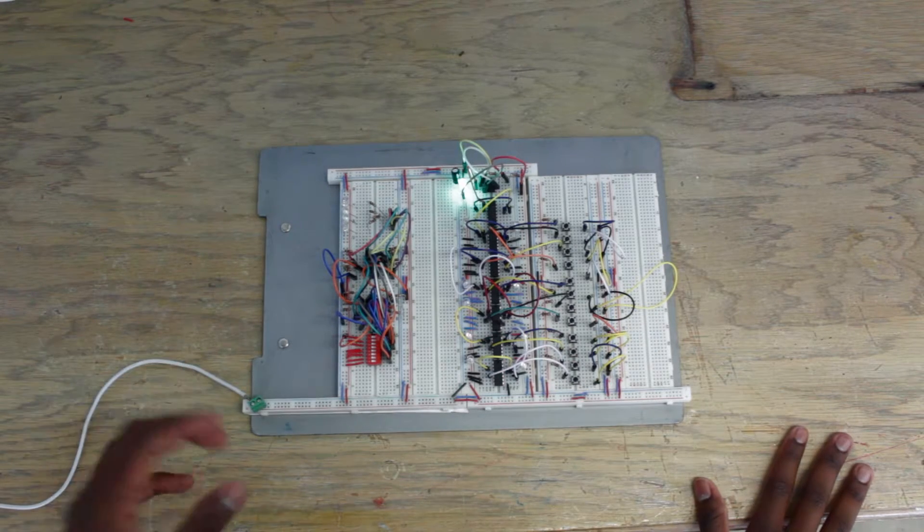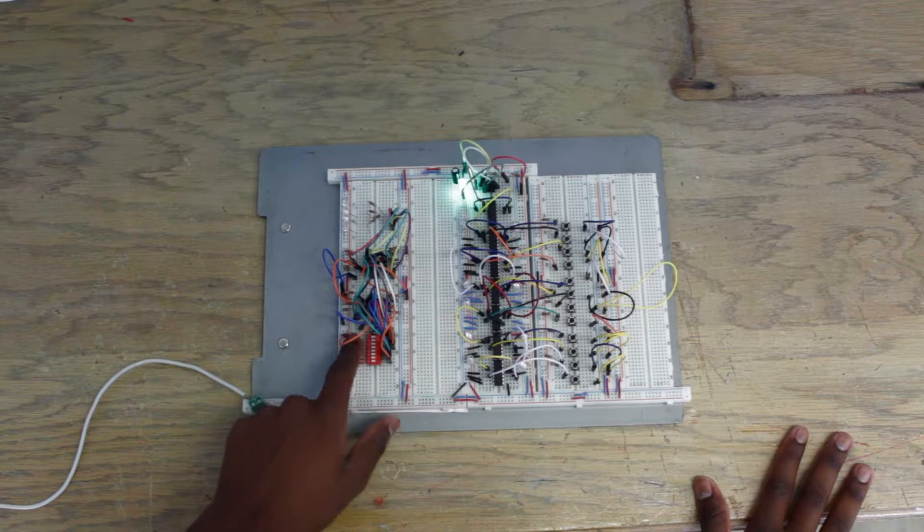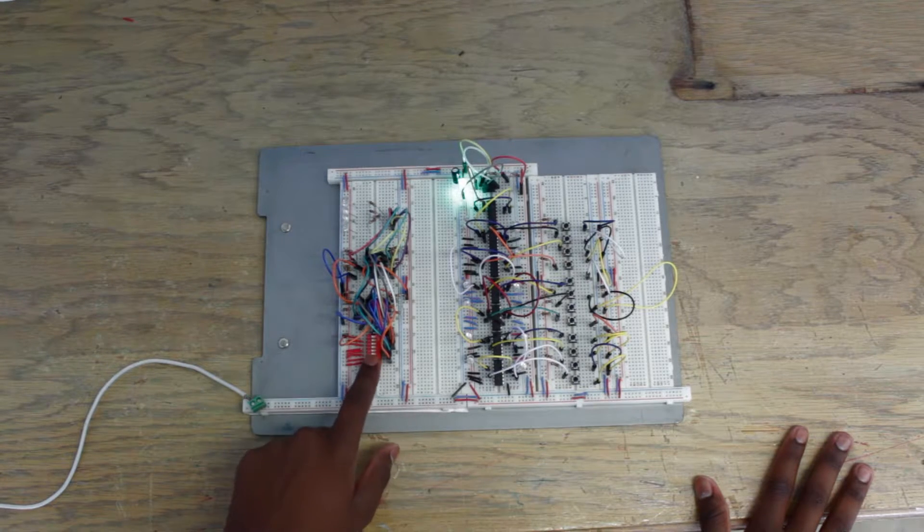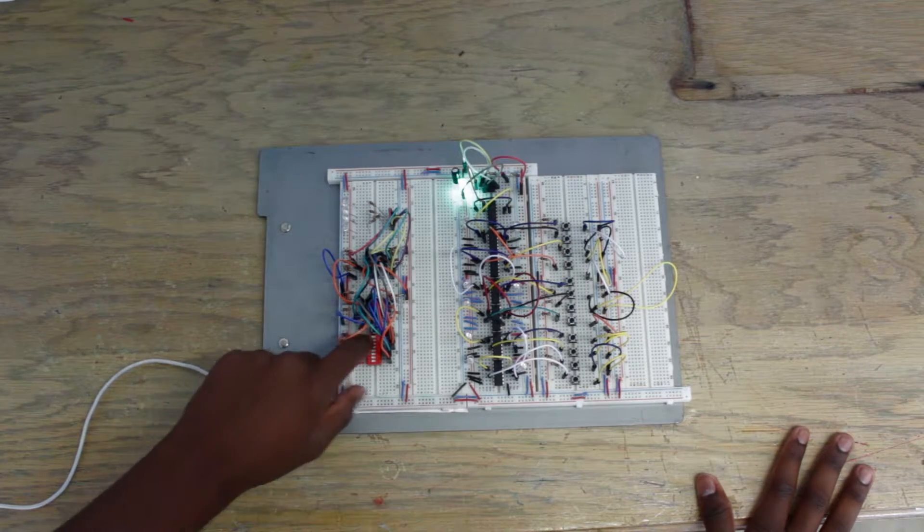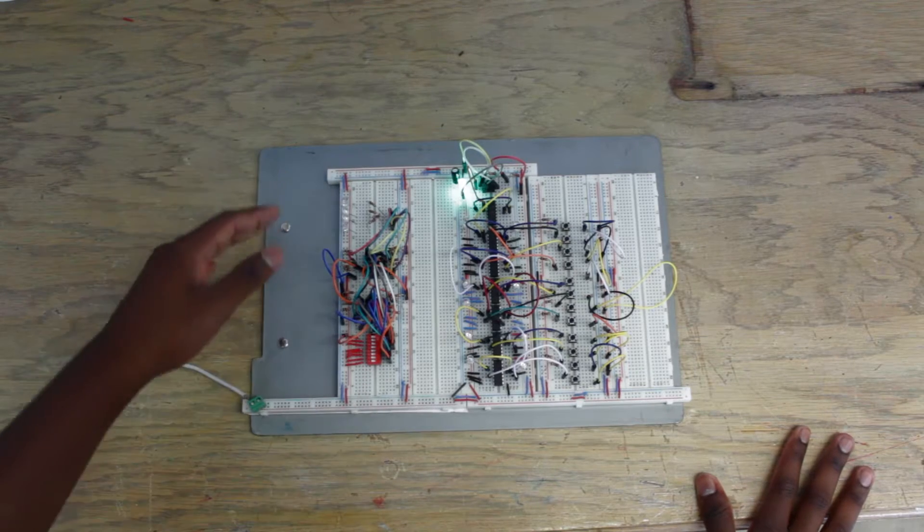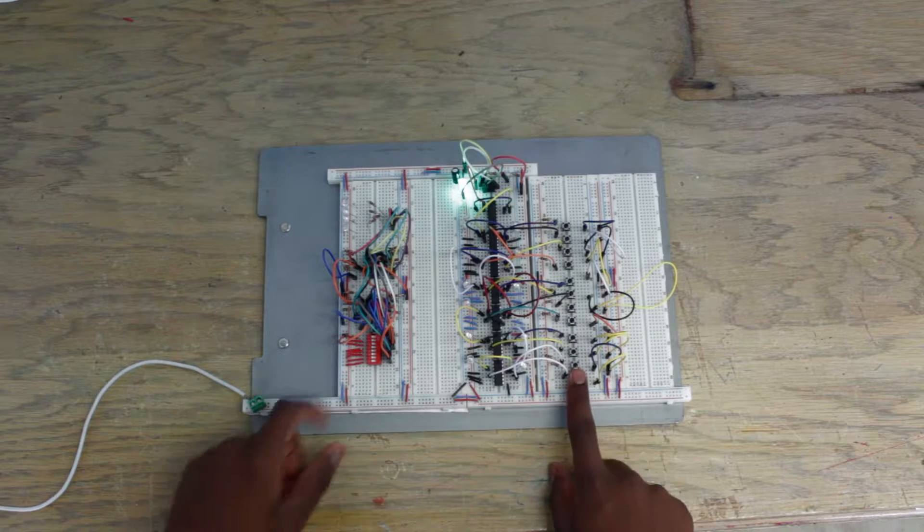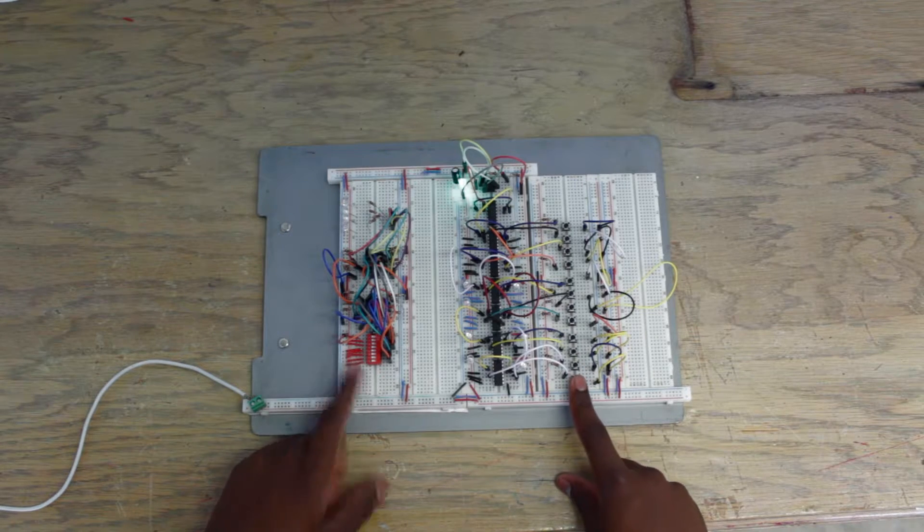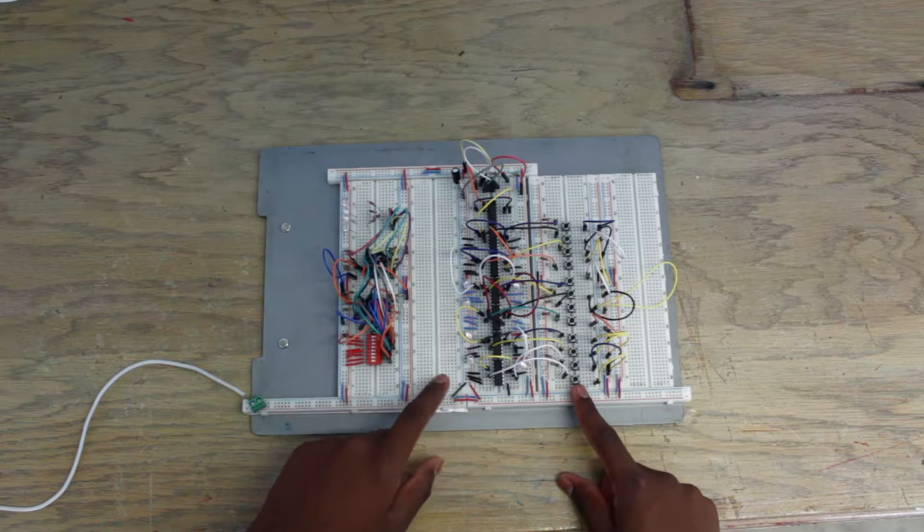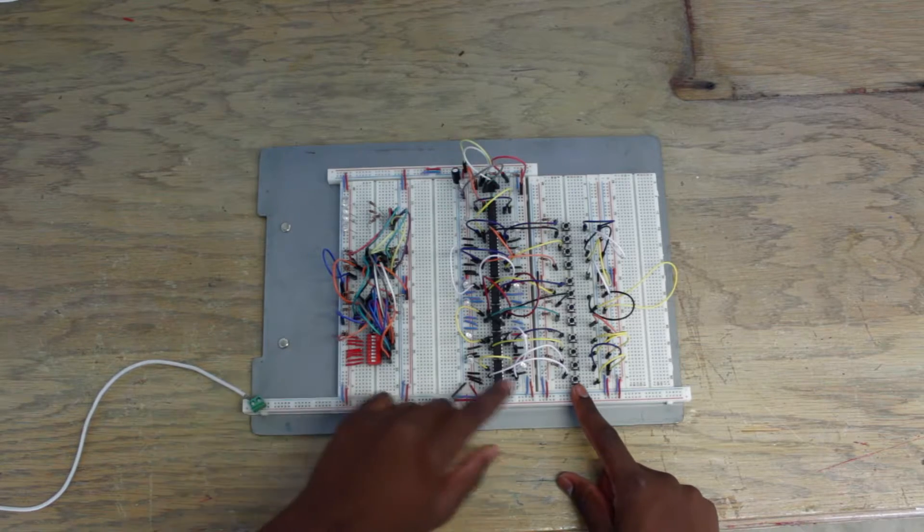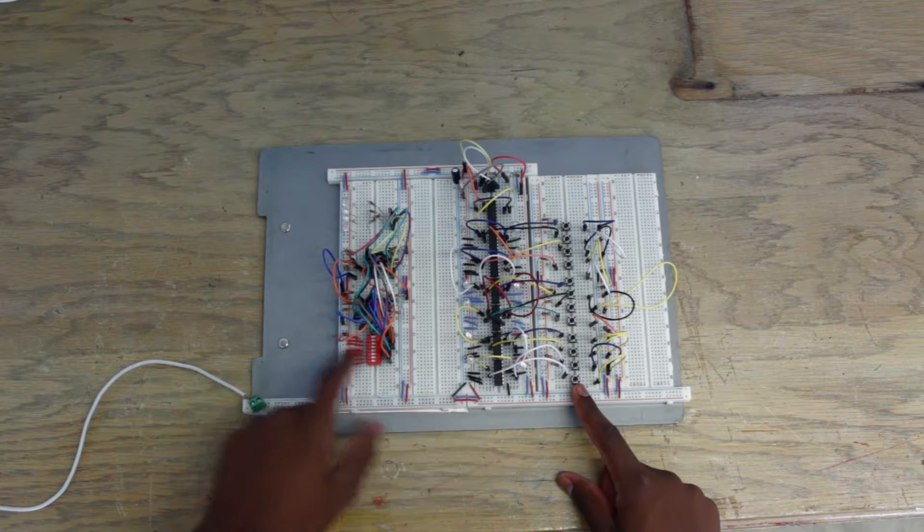What we would do next is instead of having this little bus here, where we input the values, and then the ALU calculates it, we would connect these up to it. We'd connect these up to here, right? So, it would take whatever these LED values is, and so this LED would go to the first bit, and this would go to the second, this would go to the third, fourth.